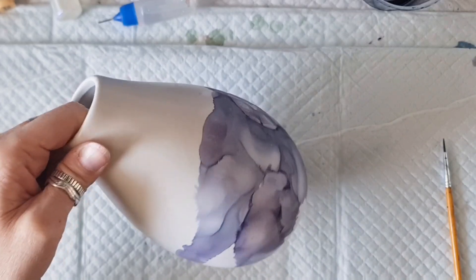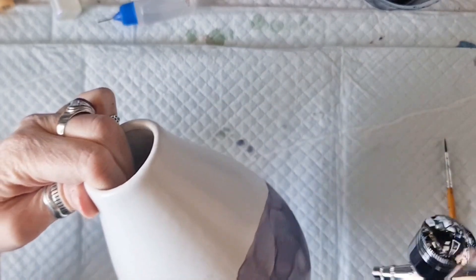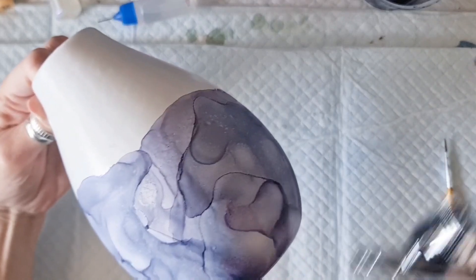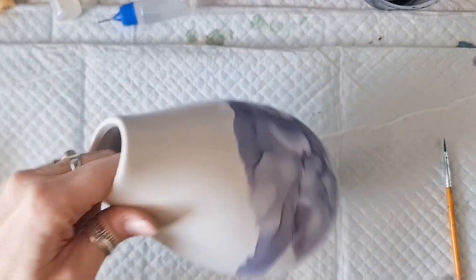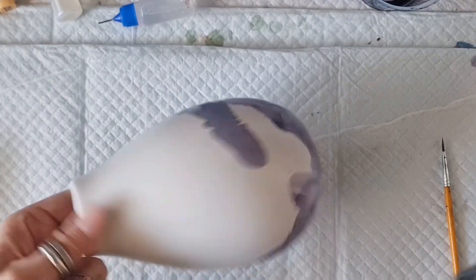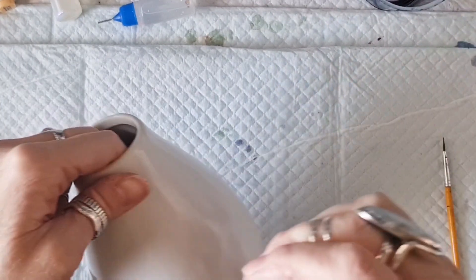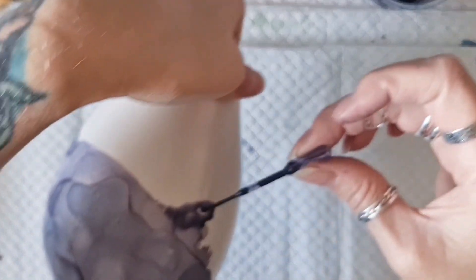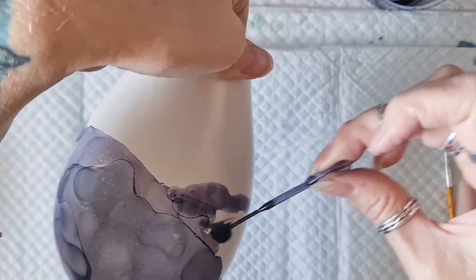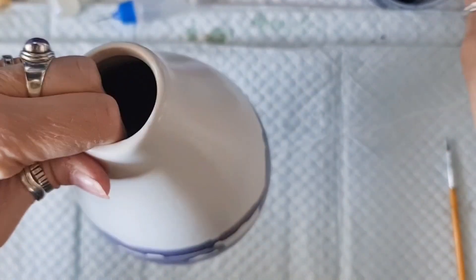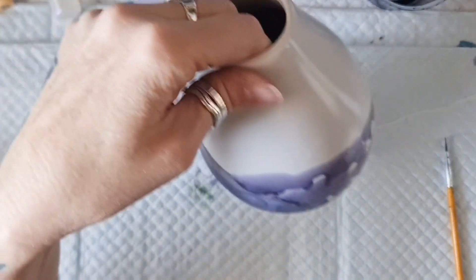You can use a heat tool with ceramics and it dries it nice and fast. Obviously you have to be careful if you're using a heat tool with ceramics because the heat tool will heat the ceramic up and you might burn yourself if you're not careful.